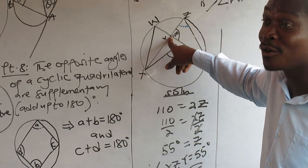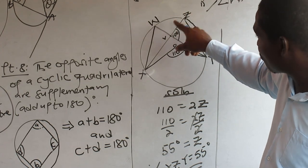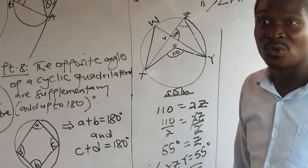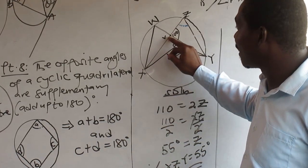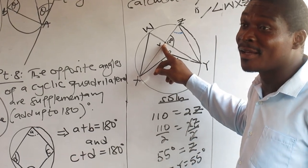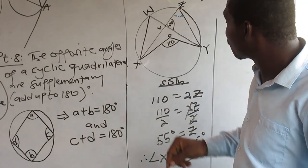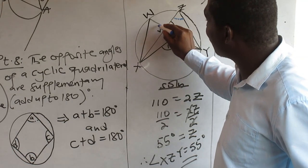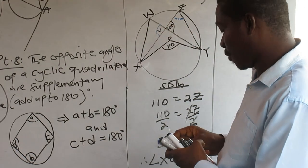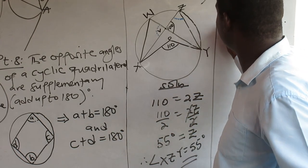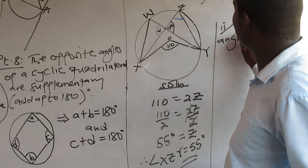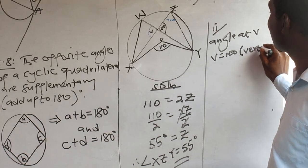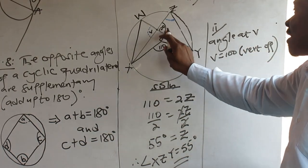We can see that Z is at 55. The angle at V here can also be 55 — because vertical opposite angles are equal. V is basically opposite to Z, so V is also 55. Now I want angle W. Which property applies to W? Let's apply Property one.